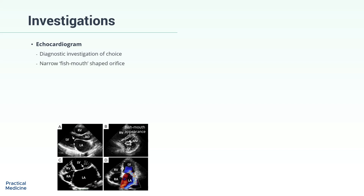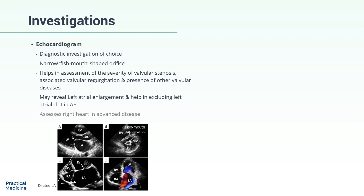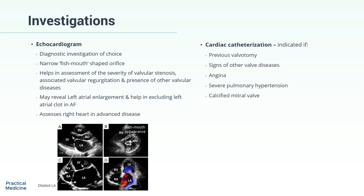Echocardiogram is the diagnostic investigation of choice. It shows a narrow, fish mouth-shaped orifice. Echocardiogram also helps in the assessment of the severity of valvular stenosis, associated valvular regurgitation, and the presence of other valvular diseases. It can also reveal left atrial enlargement and help in excluding left atrial clot in atrial fibrillation, and helps in assessing the right heart in advanced disease. Cardiac catheterization is not necessary for the diagnosis, but is indicated if there is previous valvotomy, signs of other valve diseases, angina, severe pulmonary hypertension, or a calcified mitral valve.